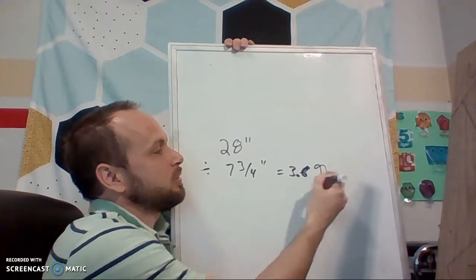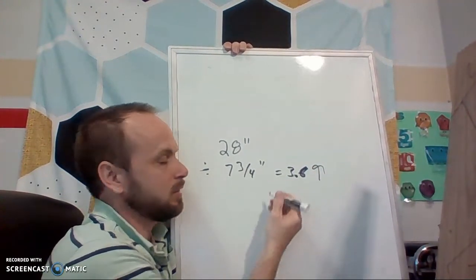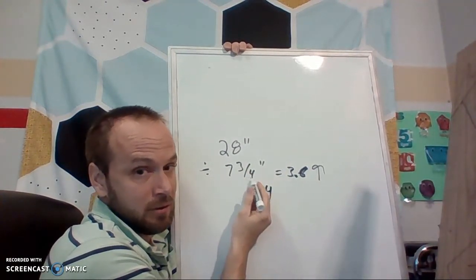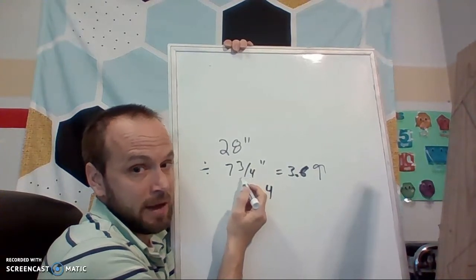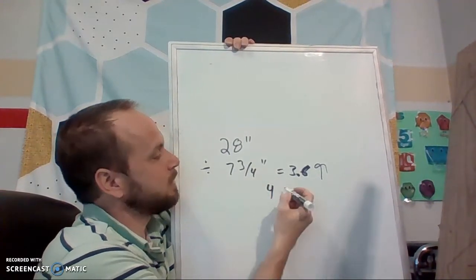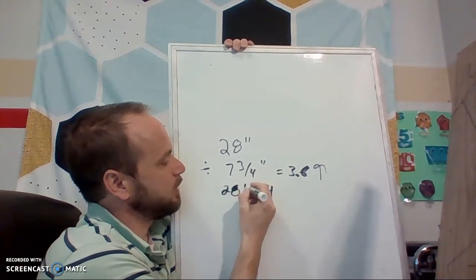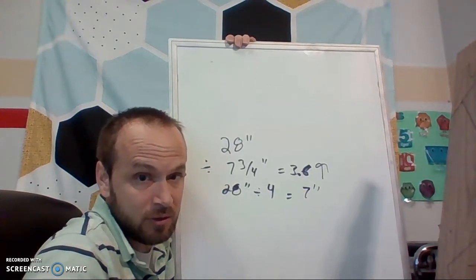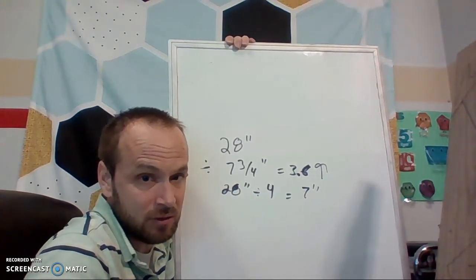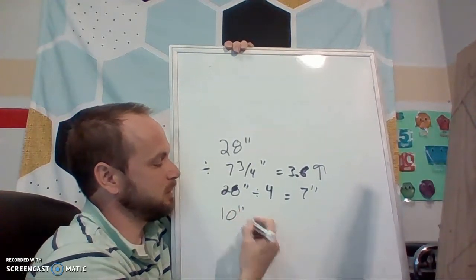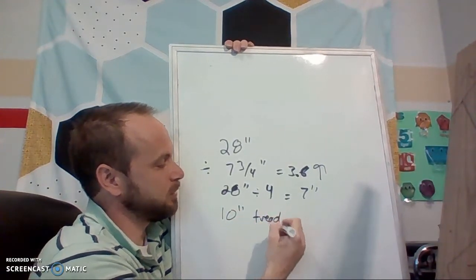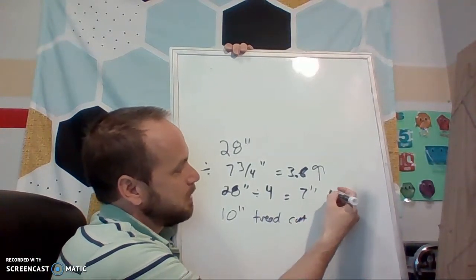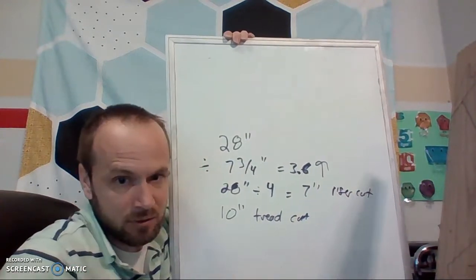So I round up — and you always round up, even if the number is less than 0.5, because when you round up it forces the riser height down, which is good since the max is 7¾ inches. So if I take 4 steps and I have 28 inches, divide those 4 steps in, each rise height should be 7 inches. And typically we just use 10 inches for our tread. So my tread cut is 10 inches and my riser cut is 7 inches.